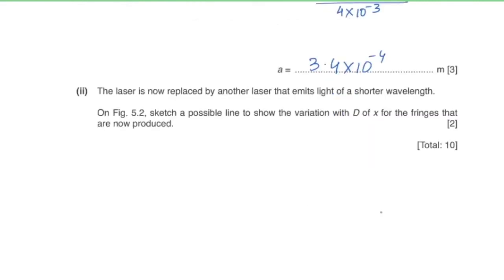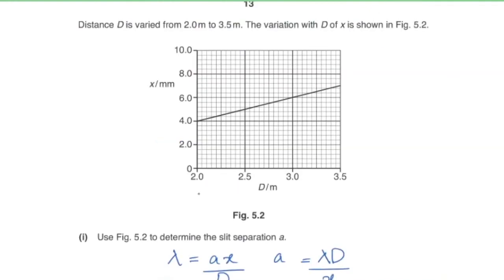Part two: the laser is replaced by one emitting a shorter wavelength. Since λ = ax/d, a shorter wavelength means x/d decreases — that is, the gradient of the x vs. d graph decreases. On figure 5.2, sketch a straight line with a smaller gradient.